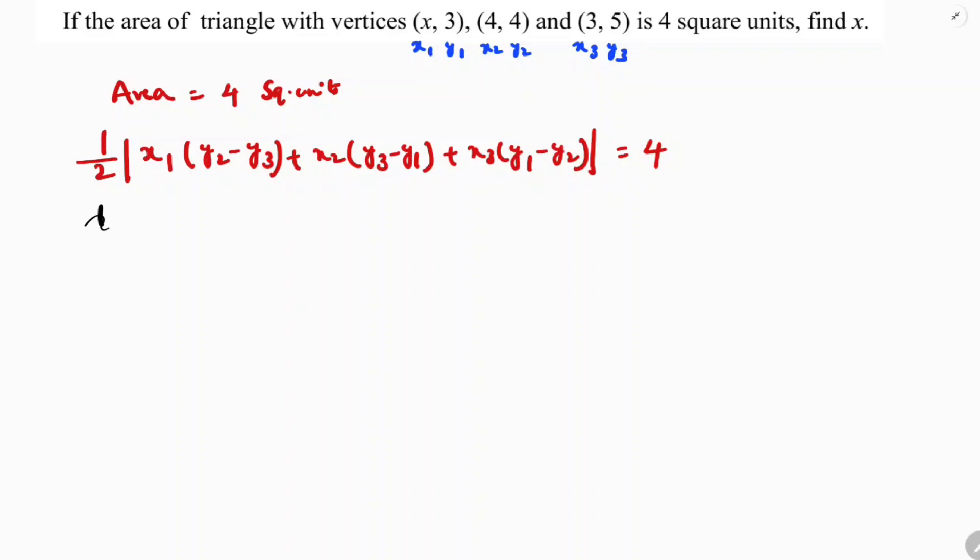Now we substitute the values. Half times the absolute value of: x1 is x, y2 is 4, y3 is 5. So x times (4 - 5).